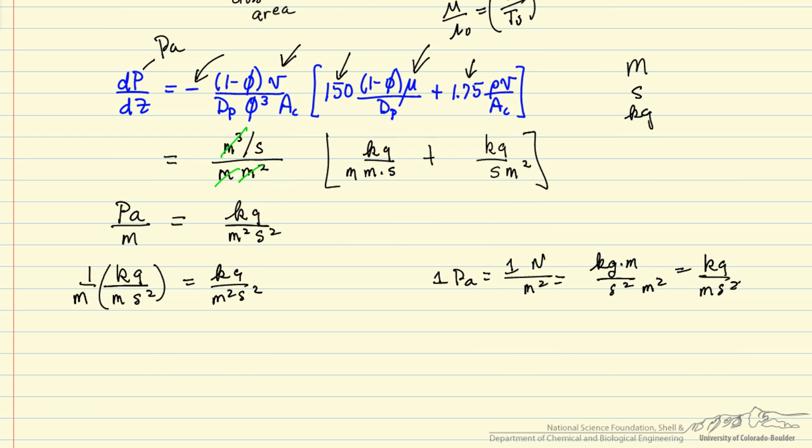And so the one term that has a big influence is the volumetric flow rate. And so V, as we move down the reactor and the pressure decreases, the volumetric flow rate increases.